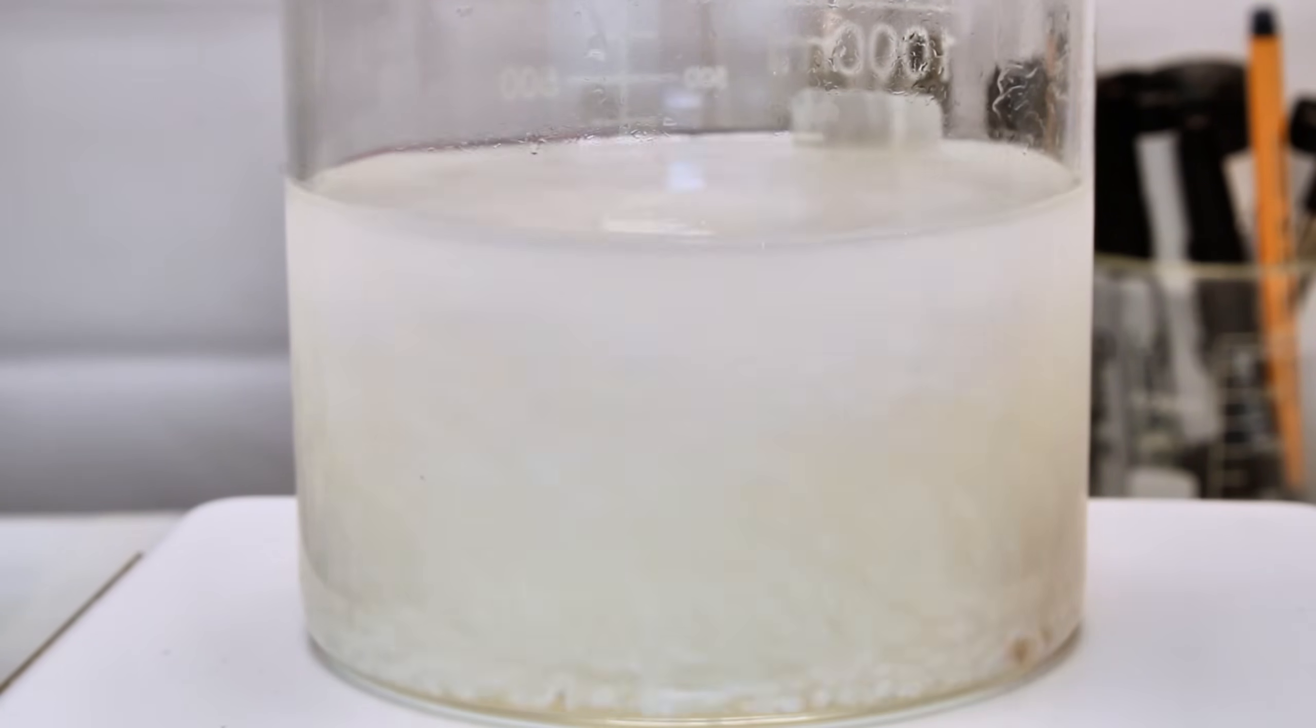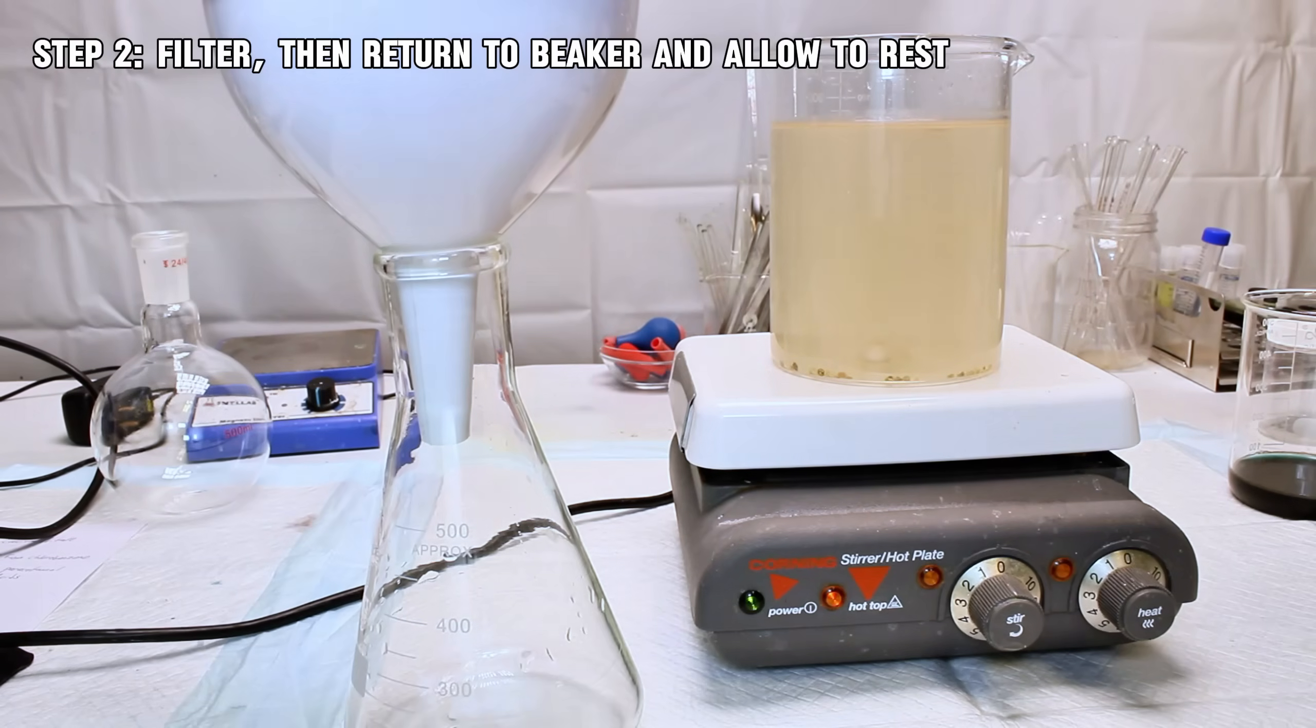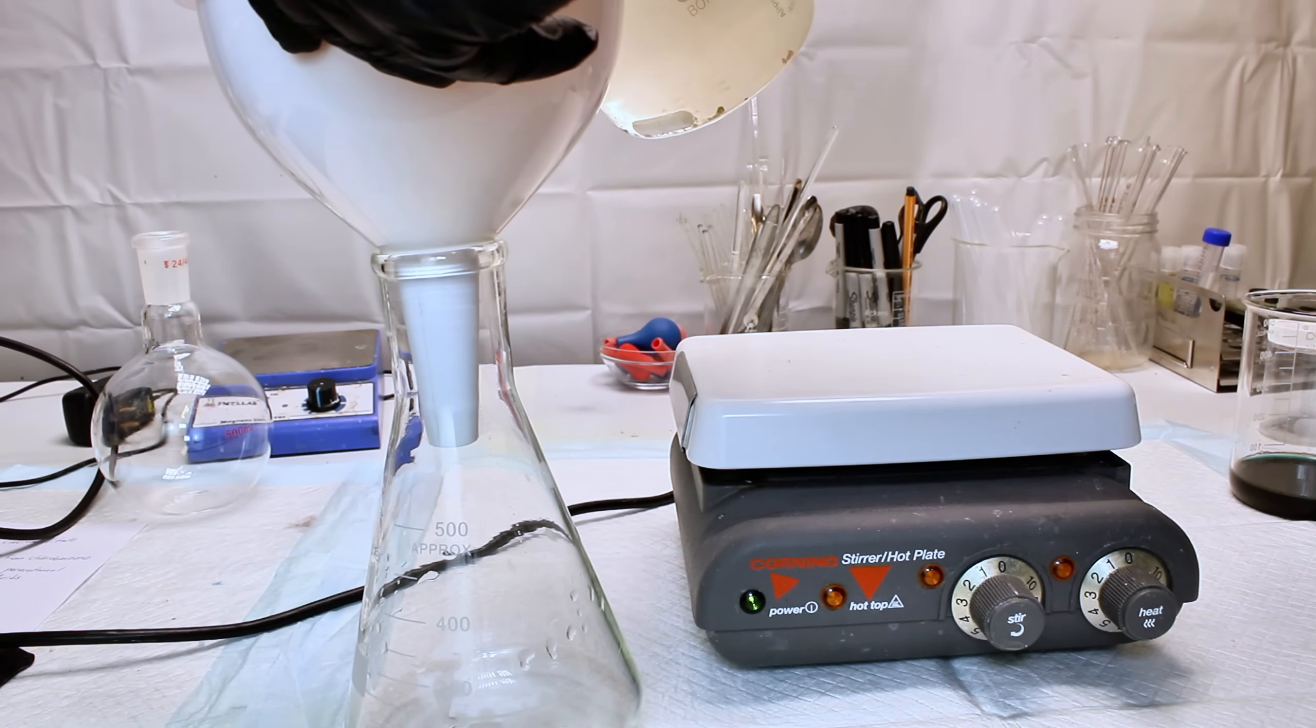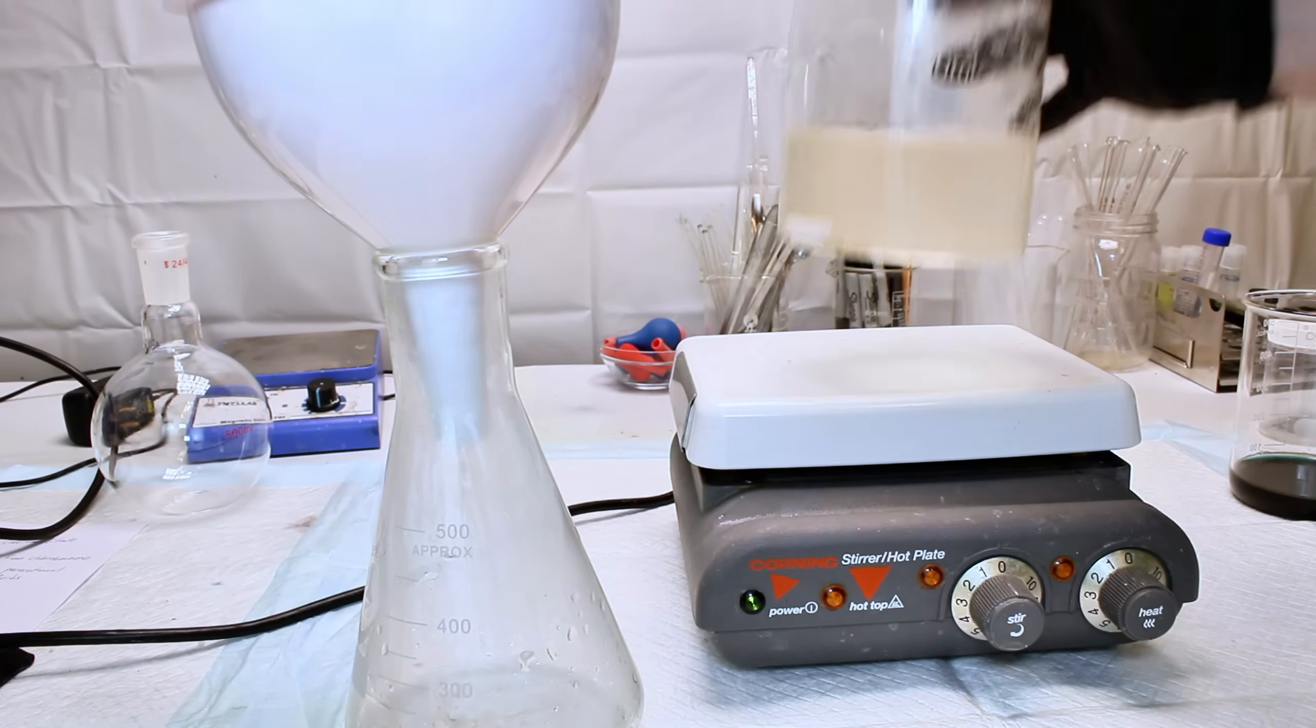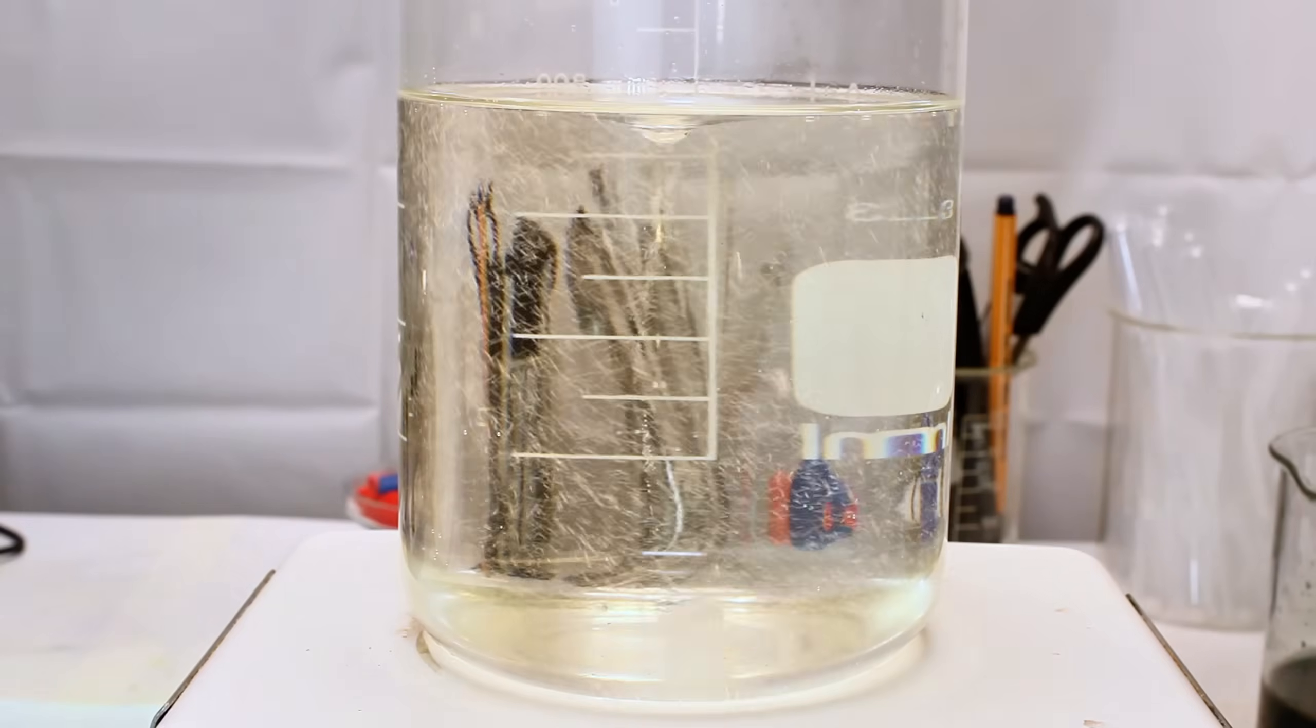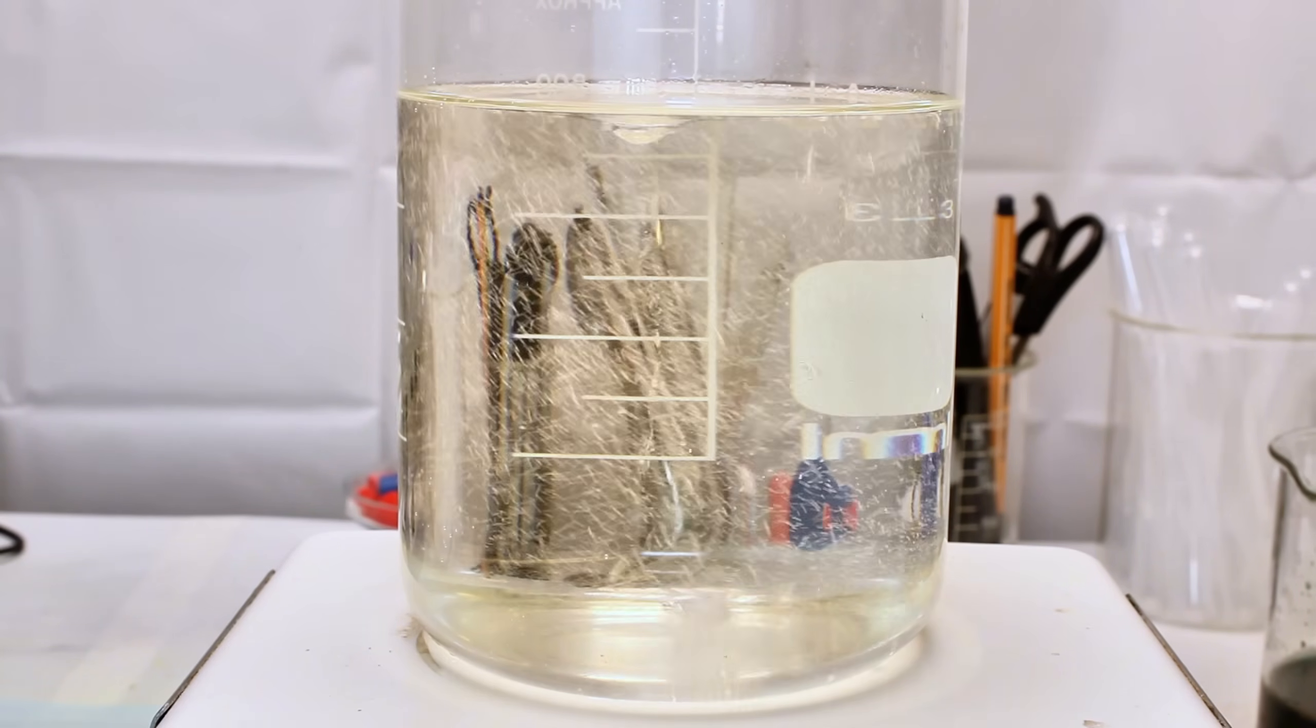Once all the urea does dissolve, I add more and repeat until I'm out of space in my beaker. At this point, I pour the still hot urea solution through a coffee filter to remove the oily brown crap that seems to be a staple in all of these fertilizers. The filtrate is then returned back to a fresh beaker and quickly heated back to boiling before taking it off and allowing it to cool.